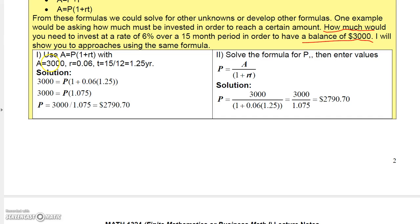So in that case, here's what we would do. You could do it a couple of different ways. But let's go back to this formula, A equal P times 1 plus RT. One thing you could do is you could just plug in all the information. You could plug in the amount, $3,000. You could plug in the rate, which is 0.06, and the time, which is 15 twelfths of a year, or 1.25 years.